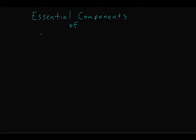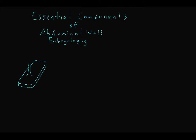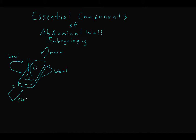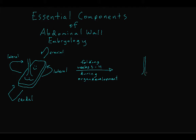First, we'll explore the essential components of embryology that pertain to development of the abdominal wall. The embryo begins as a flat, disc-shaped structure without any body cavities early in development, with the umbilical stalk attached anteriorly. The embryo begins to take a three-dimensional form as the two lateral edges and the cephalic and caudal edges of the embryo migrate or fold anteriorly around week three and four. The lateral folds will eventually become the abdominal wall, and normal development depends on these folds meeting together and fusing at the umbilicus.